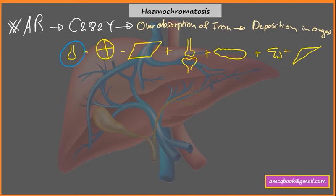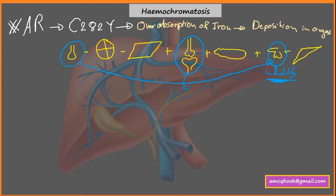The most important site is the pituitary gland, where iron deposition leads to decreased LH and FSH, causing infertility. The second most important site is deposition of iron in the joints, which leads to joint pain.